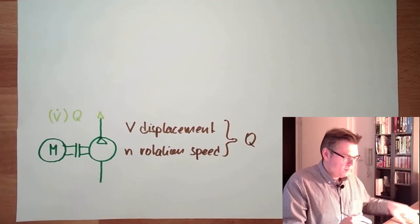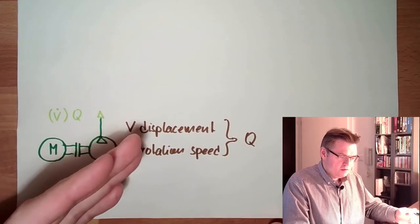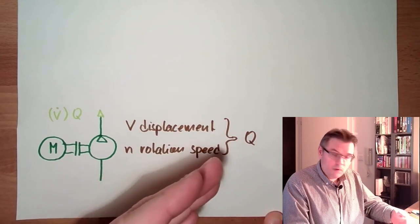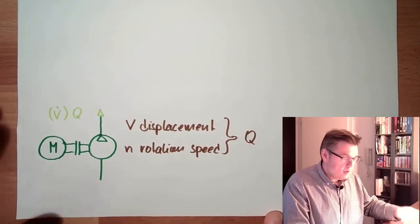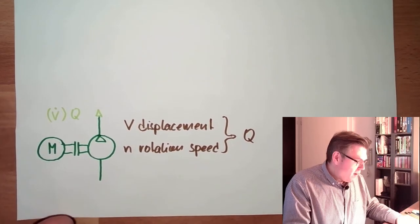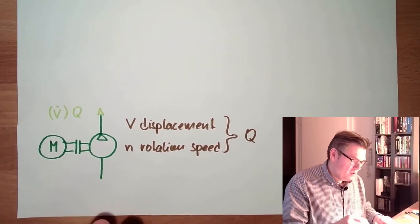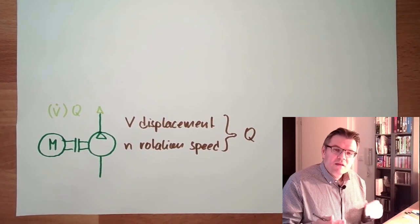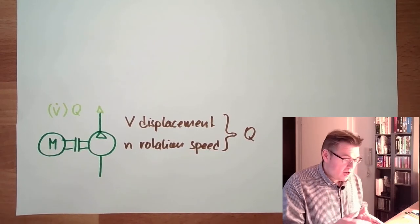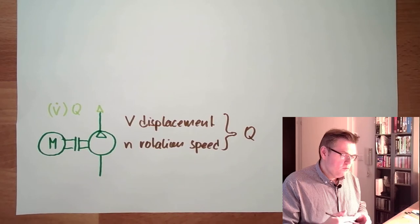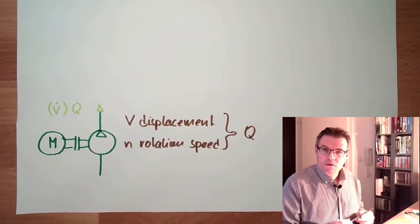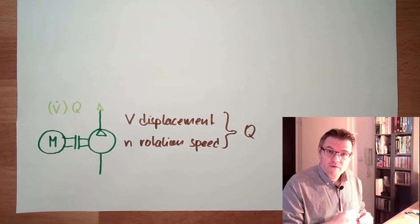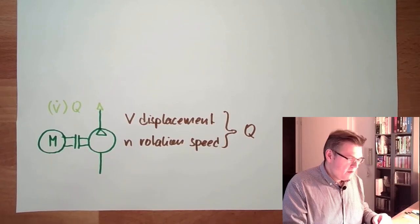If I have a small displacement and have high rotation speed, there is still quite a lot of Q. However, the pumps do have limits, of course. They have limits. In rotation speed, there is a limit. There is usually a lower rotation speed and the upper rotation speed. This is something to do with lubrication.